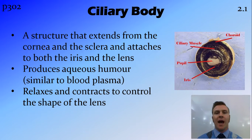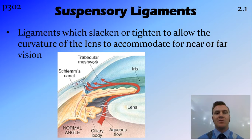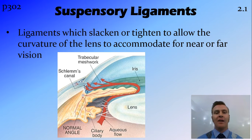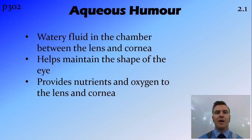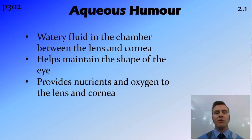Another role of the ciliary body is producing the aqueous humour, which is found in the front chamber of the eye. The suspensory ligaments — or their alternate name, one of my favourite names in all of biology — the zonules of Zinn, are ligaments which slacken and tighten to allow for changes in lens shape. They attach the lens to the ciliary body. The aqueous humour is found in the chamber between the lens and cornea, helping to maintain the shape of that front part of the eye, as well as providing nutrients and allowing oxygen to diffuse through to the lens and cornea from the scleral layer where the blood vessels are found.